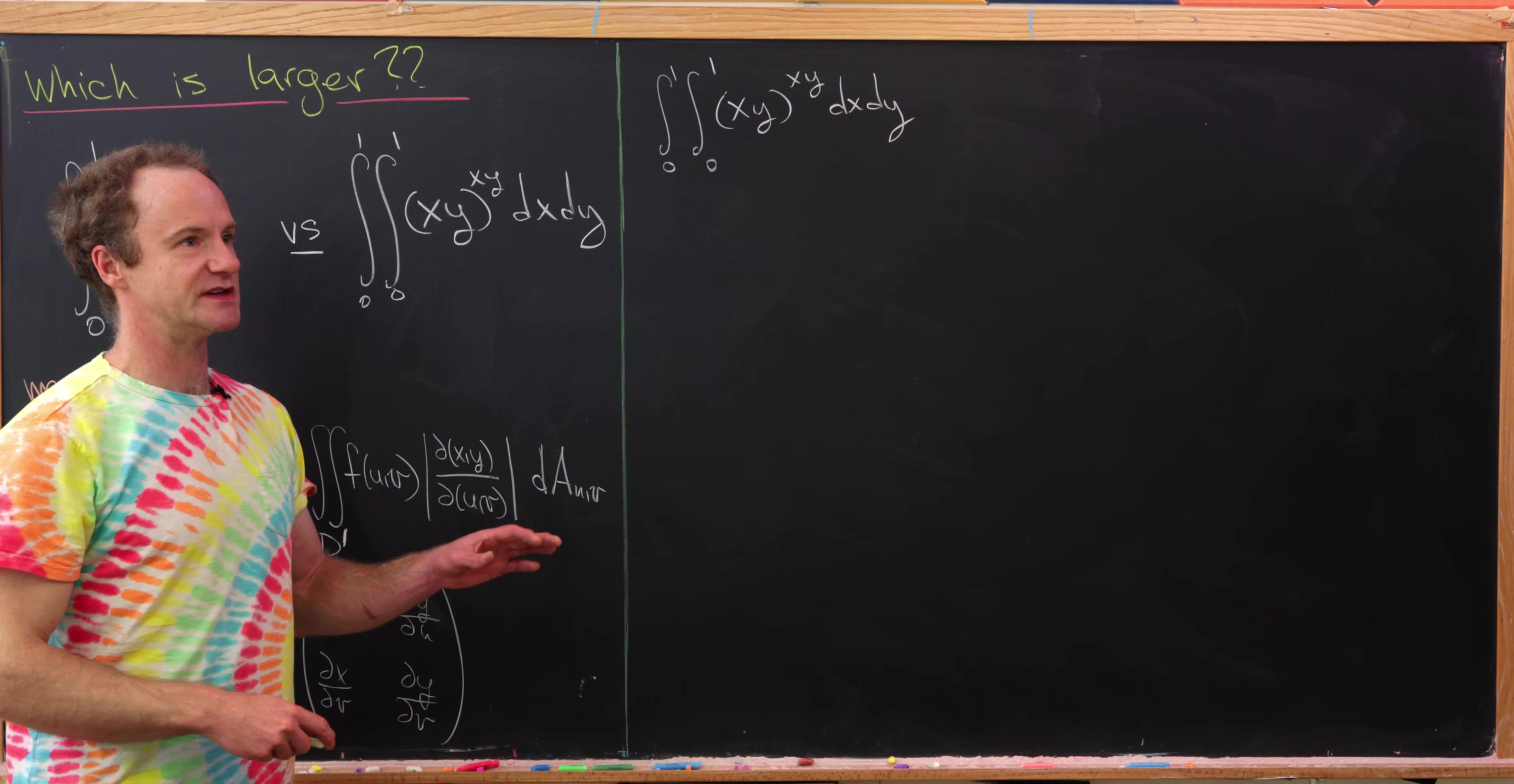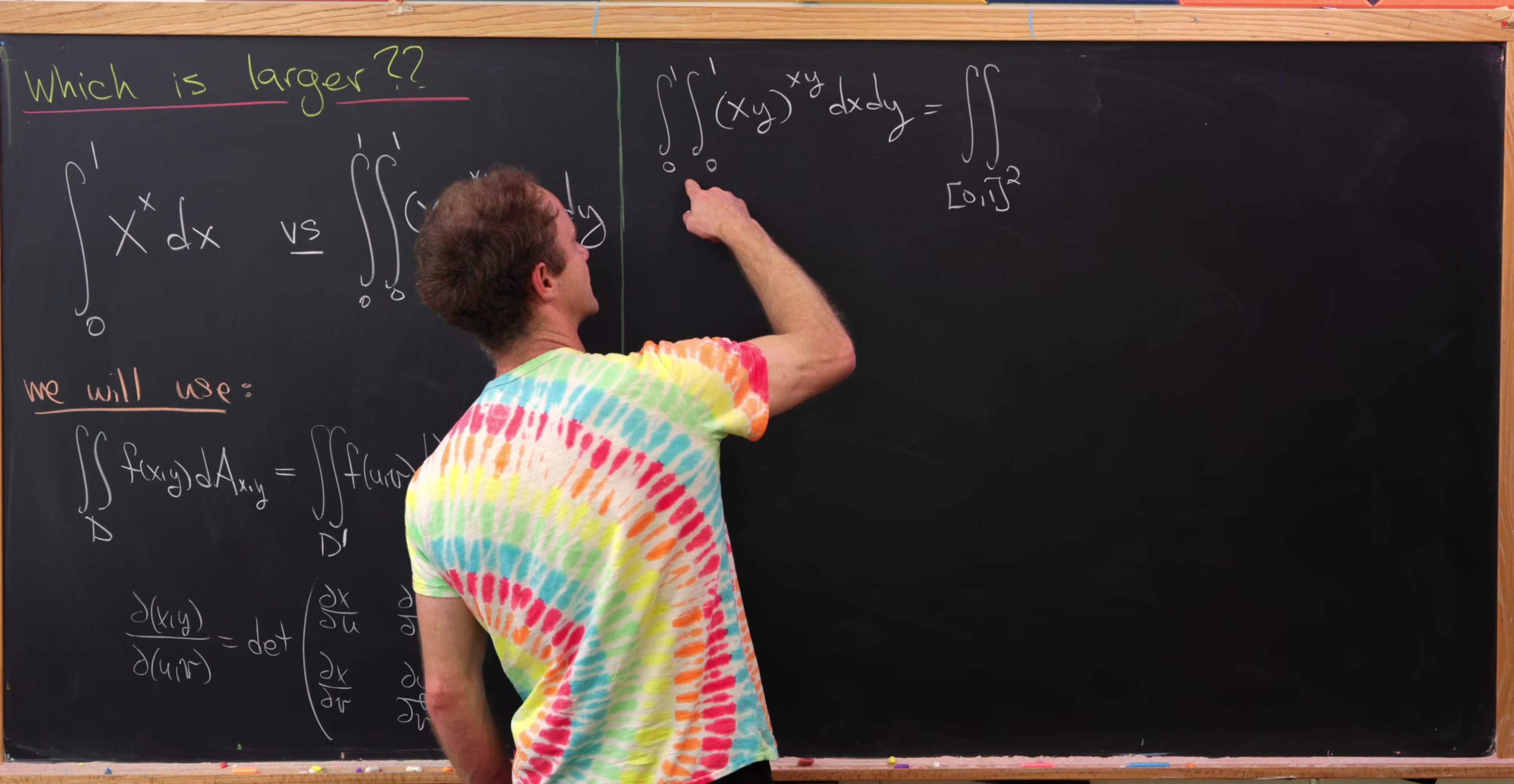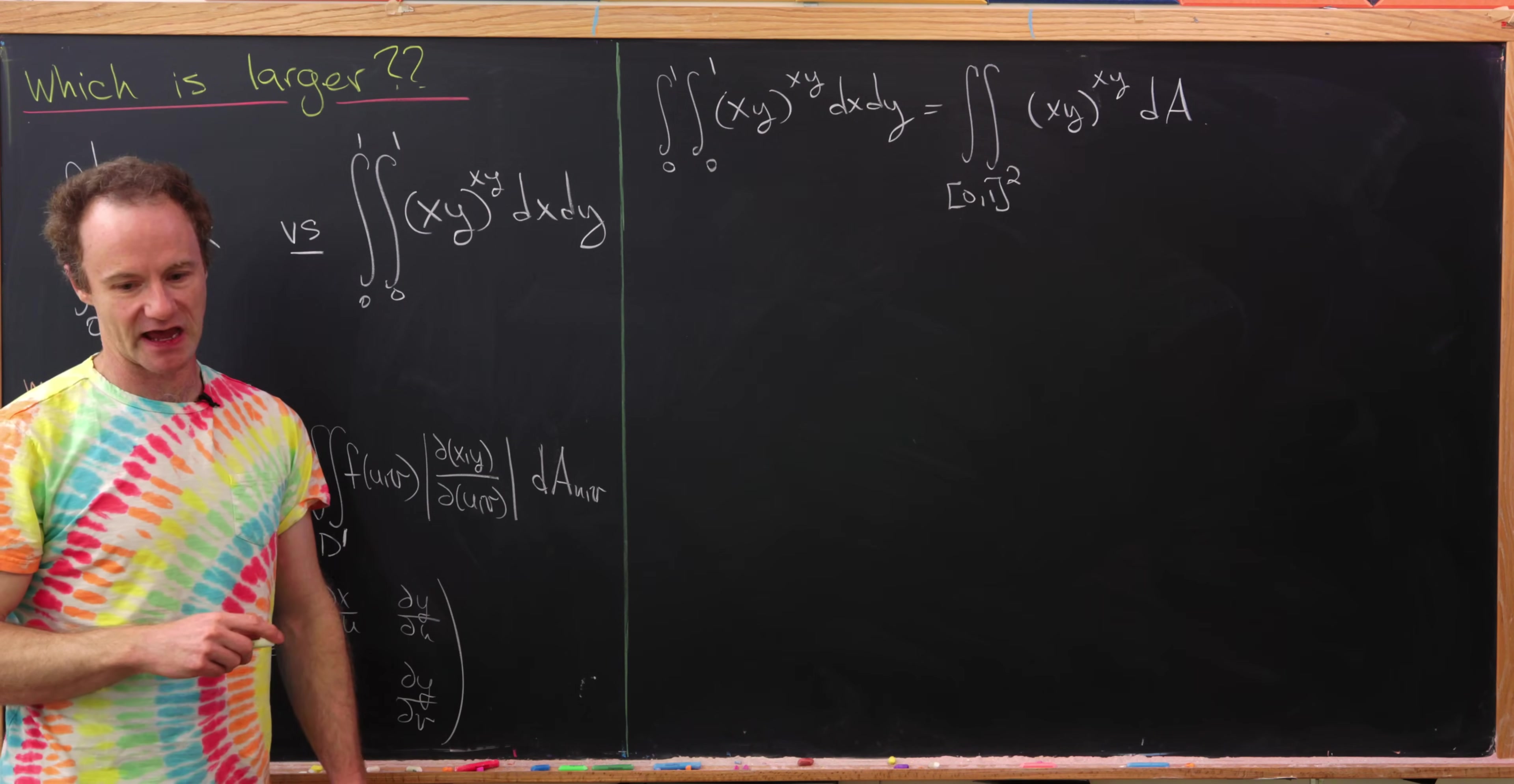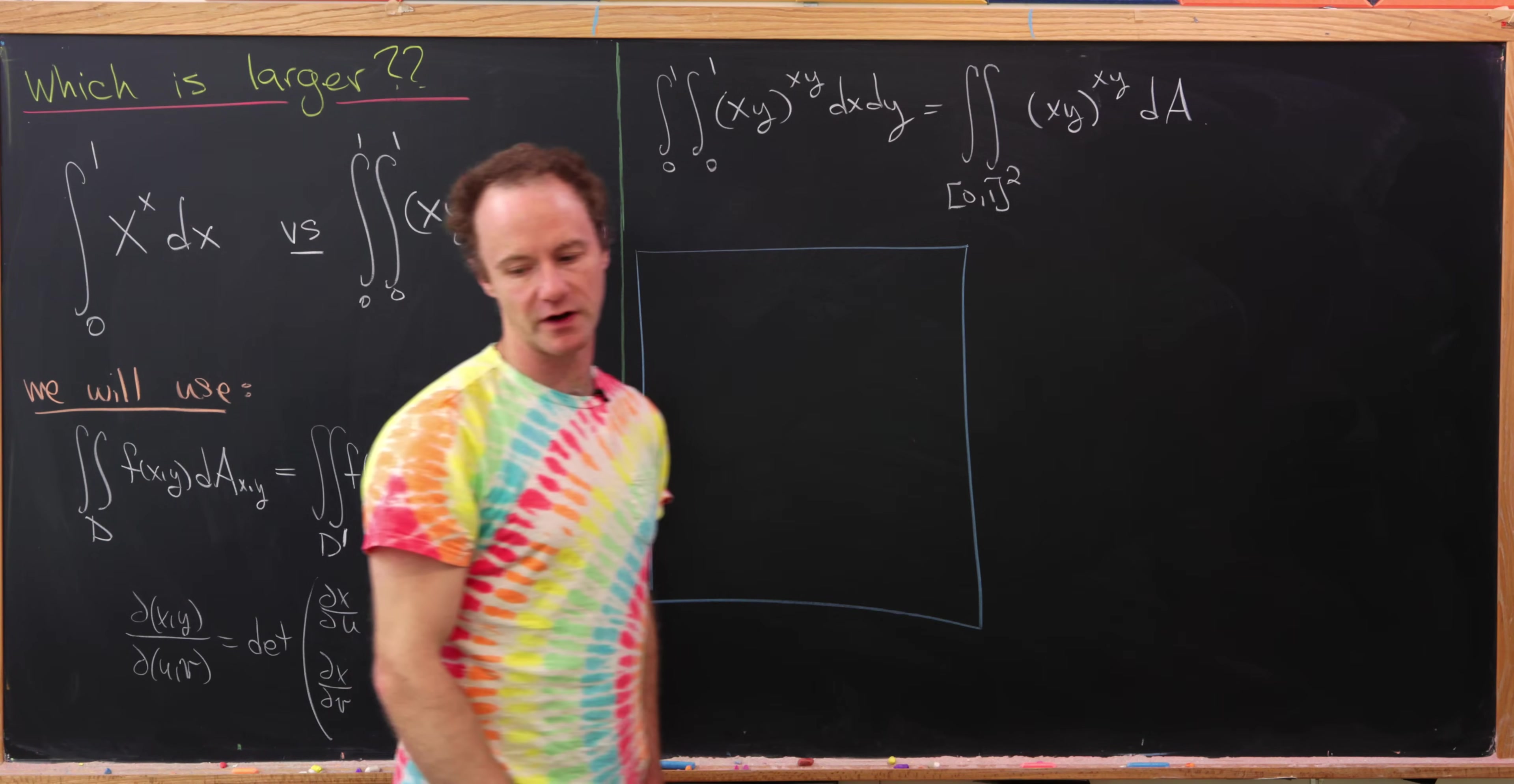But now we'll write this instead as a double integral. This will be the double integral over the unit interval squared of x times y to the x times y dA, where we recognize that dA is happening in the xy plane. Now we're going to do a change of variables, and that's maybe the biggest part of the solution to this problem.